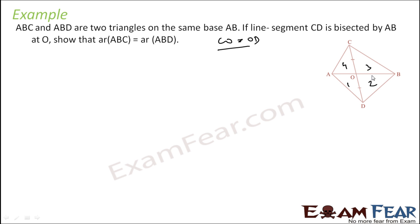Now since AO is equal to OD, I can say that area of 2 is equal to area of 3. Also, area of 1 is equal to area of 4. Since BO is a median in this triangle, 2 is equal to 3. In this triangle AO is a median, so 1 is equal to 4. So if you add these two, area of 1 plus 2 is area of ABD, and 3 plus 4 is area of ABC. And that is what we have to prove.